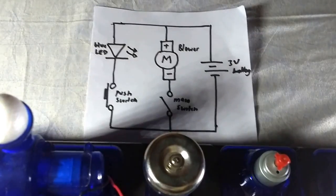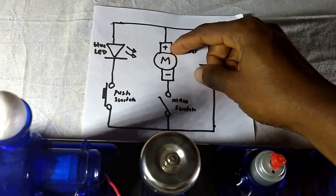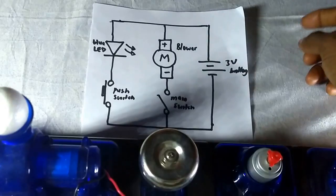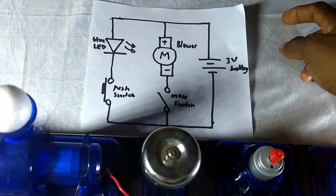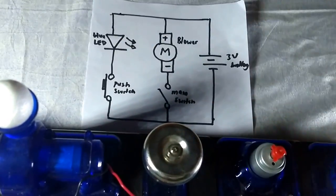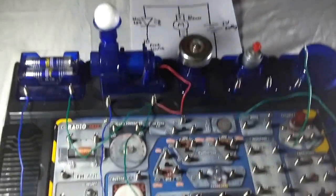For this experiment, the blower is controlled by the main switch, while the blue LED is controlled by the push switch. And this is the circuit diagram.